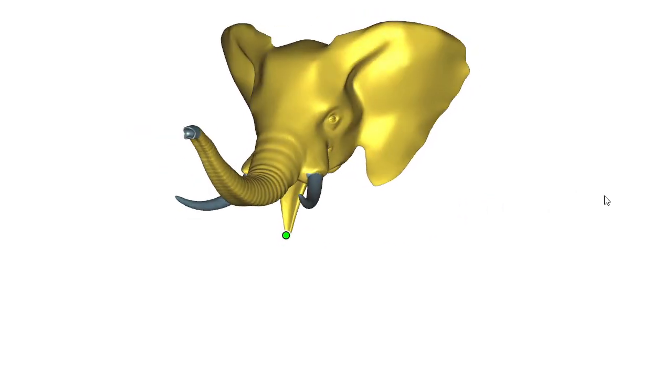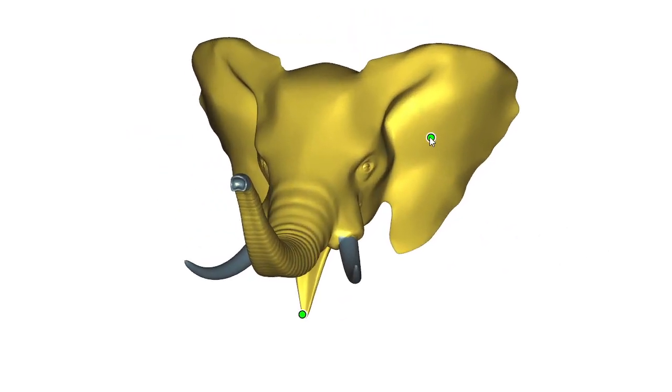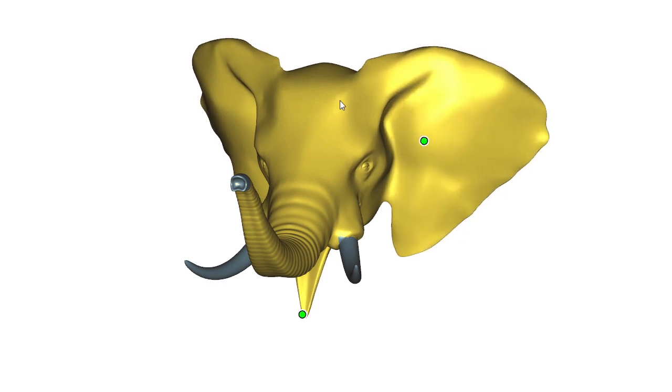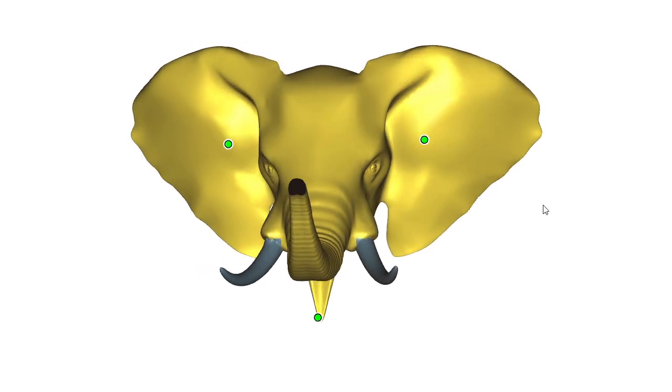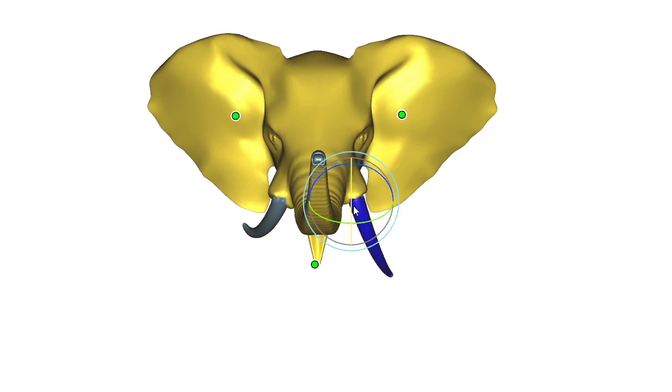We ensure affine invariance at the energy level, rather than adding additional constraints or relying on runtime optimization. Our weights are very fast to compute, which greatly enhances interactive user experience when deforming complex shapes.